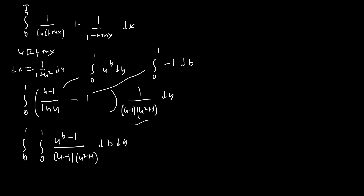Now hopefully u to the b minus 1 should remind you of the common representation for the digamma function: digamma of z equals the integral from 0 to 1 of 1 minus x to the z minus 1 over 1 minus x dx, minus gamma. We're going to follow similar ideas, but we can't use that formula directly because we have this pesky u squared plus 1 factor. So we're going to expand 1 over 1 plus u squared as a power series.